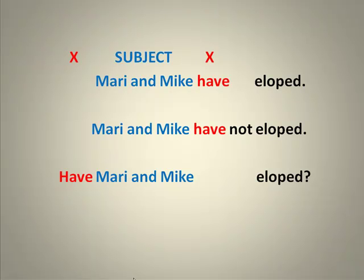'Marie and Mike have eloped.' 'Marie and Mike have not eloped.' 'Have' is the X word. I can move it to the front to make the yes or no question: 'Have Marie and Mike eloped?' And I see that 'Marie and Mike' are the words in that space between 'have' and 'have.' That's the subject. We're really starting to see that the subject is more a place in a sentence rather than any specific thing that we can explain.